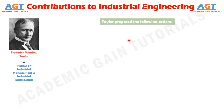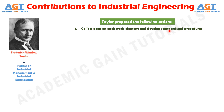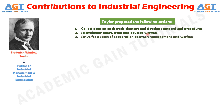He proposed few actions which include: Number 1, collect data on each element of work and develop standardized procedures for workers. Number 2, scientifically select, train, and develop workers instead of letting them train themselves. Number 3, strive for a spirit of cooperation between management and workers so that high production at good pay is fostered. Number 4, divide the work between management and labor so that each group does the work to which it is best suited.